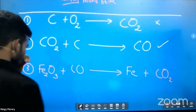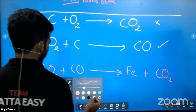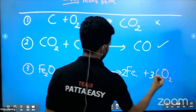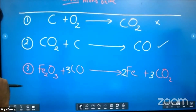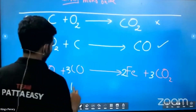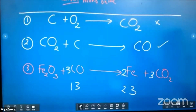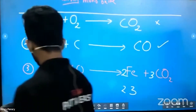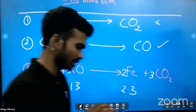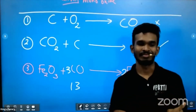Balancing this equation uses the 1-3-2-3 technique: coefficients 1, 3, 2, 3. That is the balancing. Job done — iron is extracted.